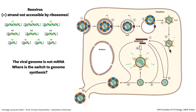mRNAs exit the core particle through turrets that are opened by removal of the outer shell, and they're translated to make viral proteins. To make more particles, new core particles are built with mRNAs inside — single-stranded at that point — along with the RNA polymerase. The polymerase then makes them double-stranded. The switch to genome synthesis occurs upon packaging the mRNAs, because they're no longer translated. Eventually the outer shell proteins are added and virus particles leave the cell.